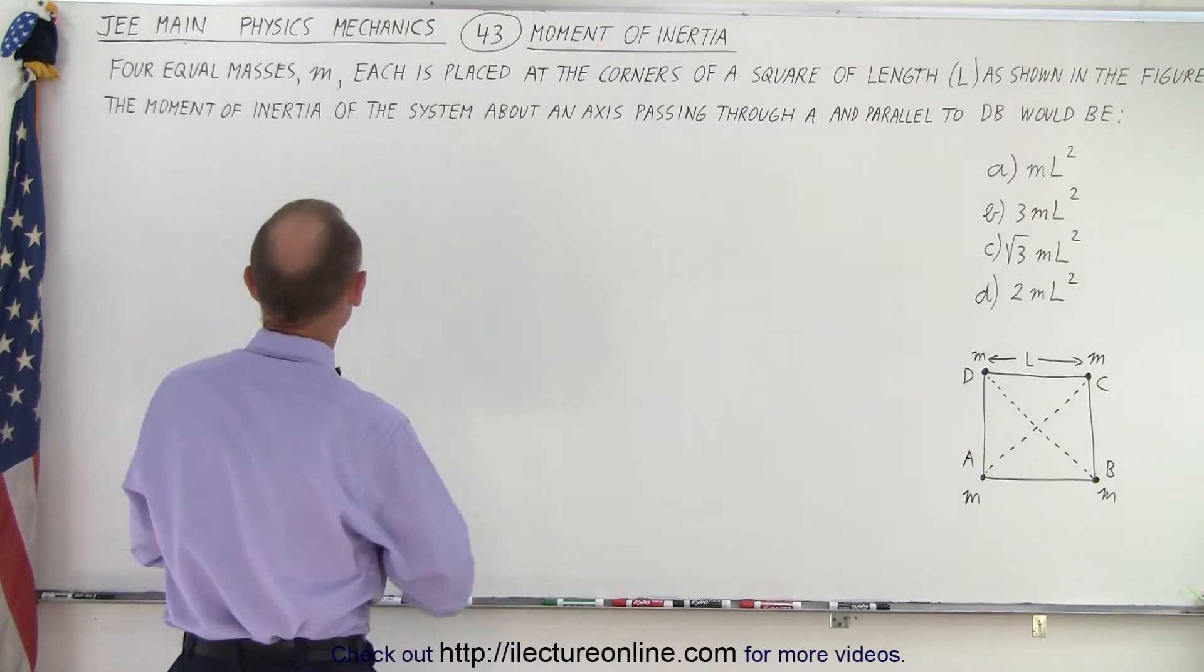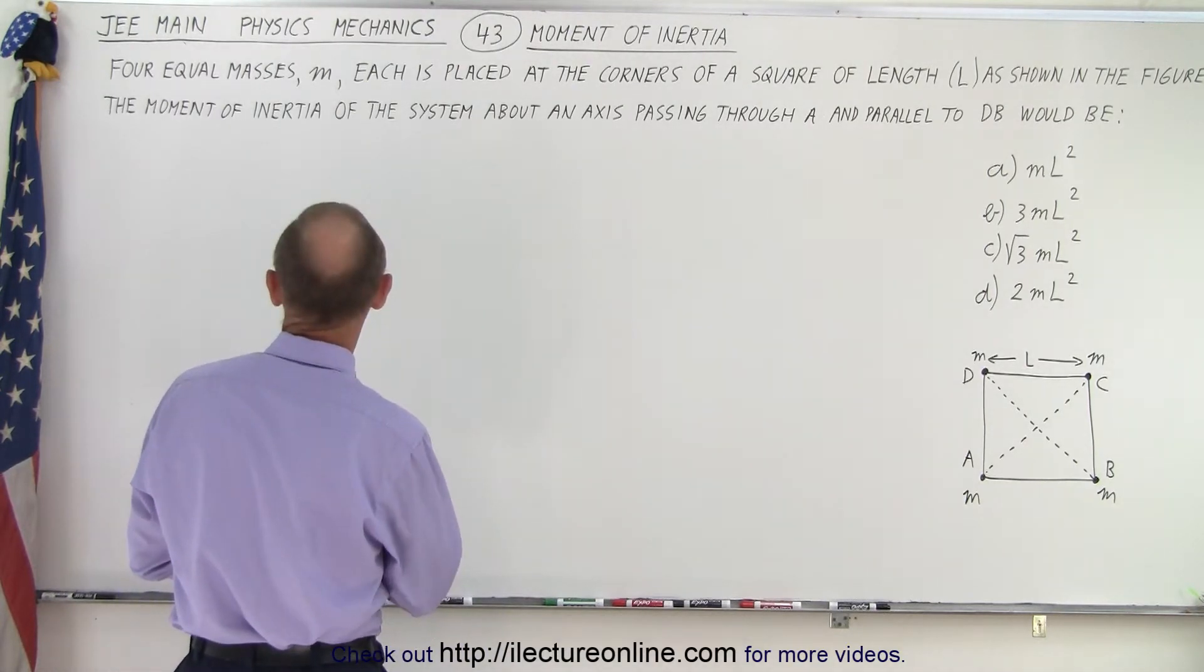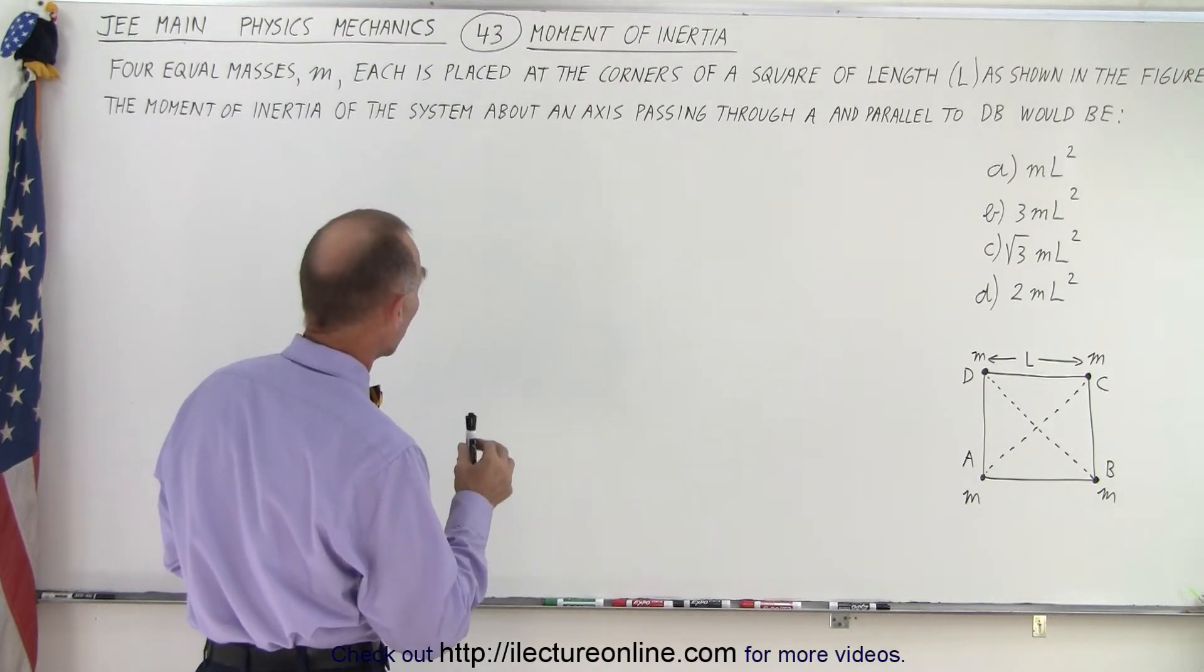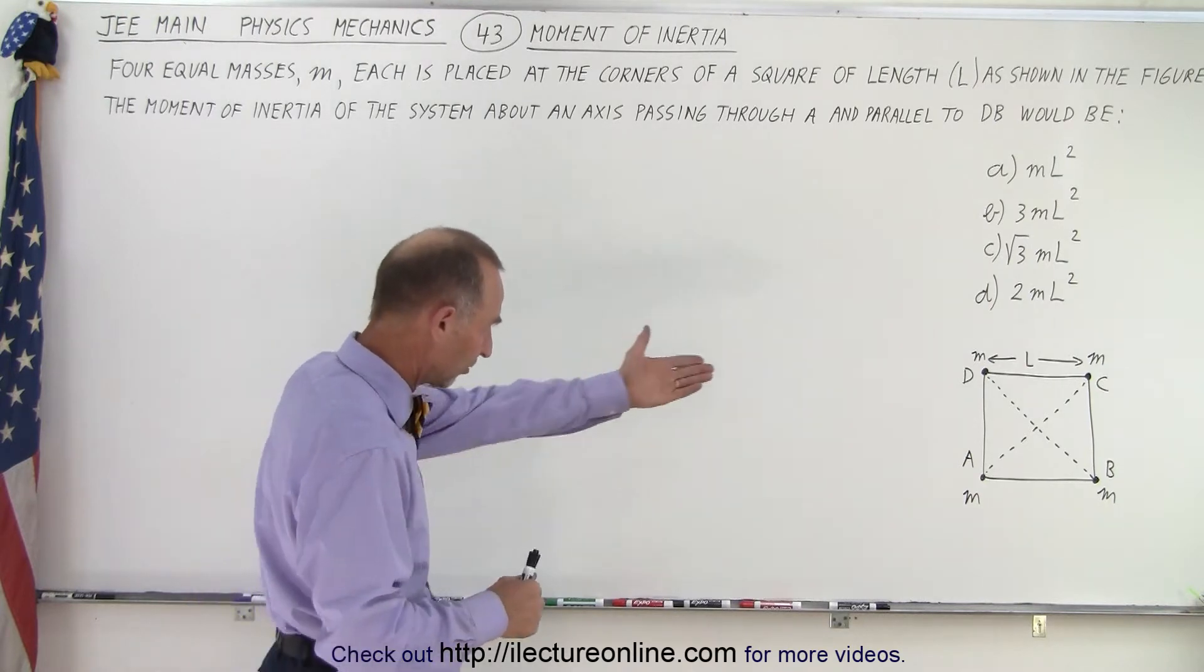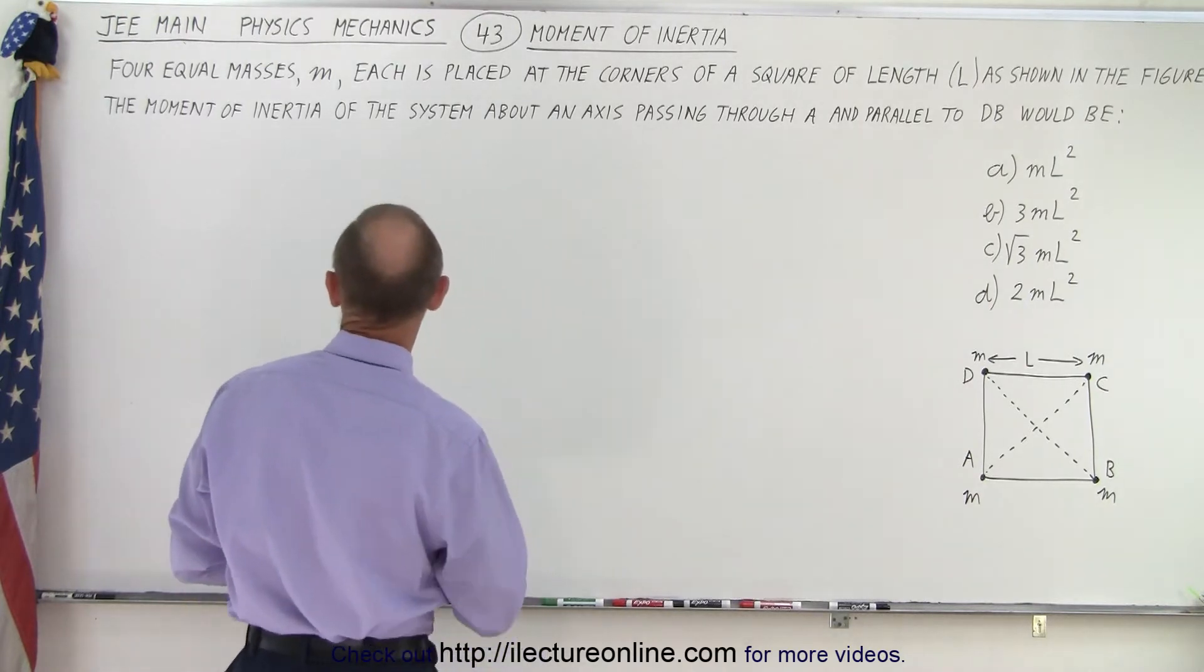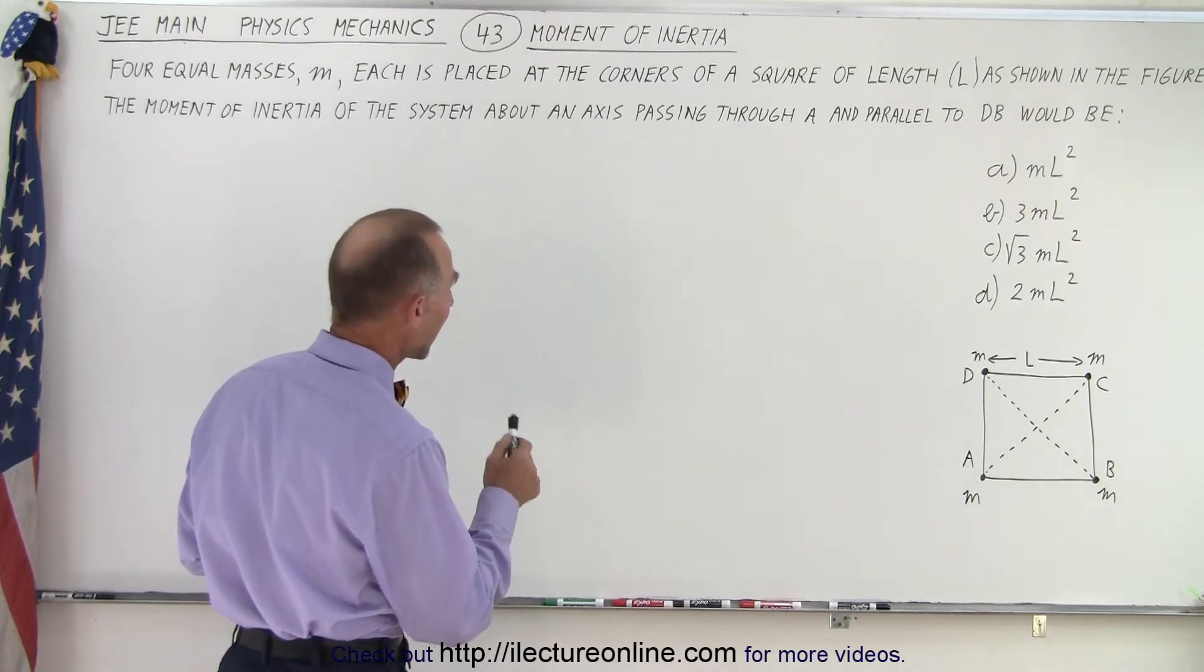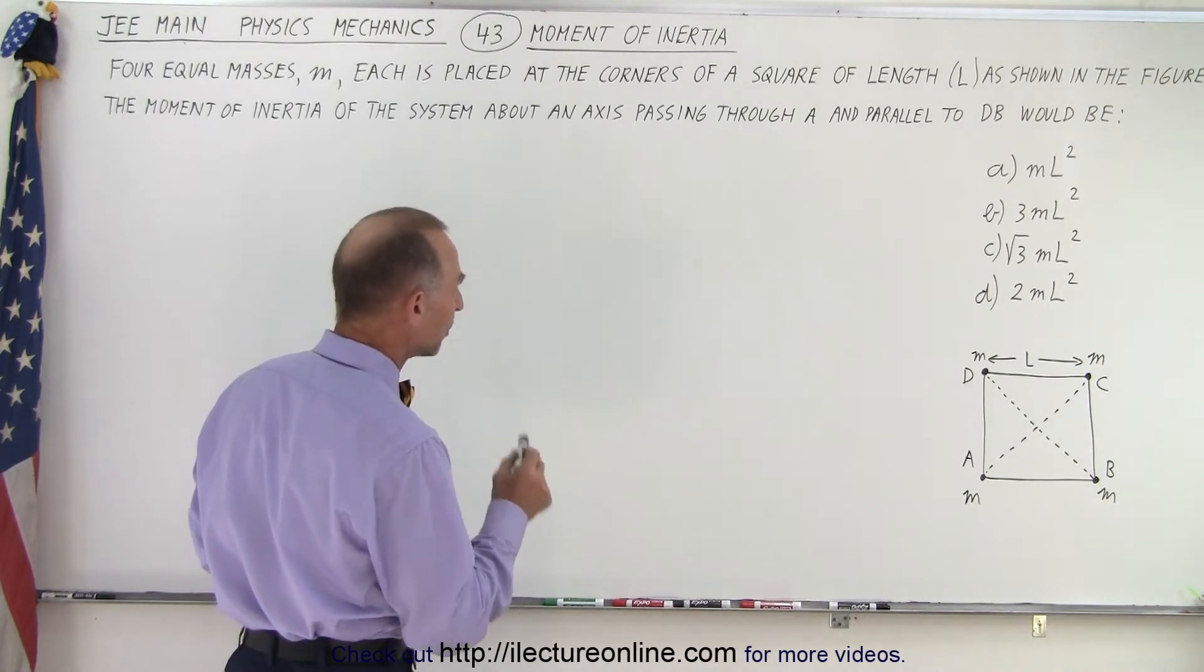It's part of the JE main physics mechanics problems and it reads: four equal masses m, each is placed at the corners of a square of length L as shown in the figure. So they were nice enough to show us a figure. The moment of inertia of the system about an axis passing through A and parallel to DB would be.